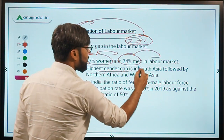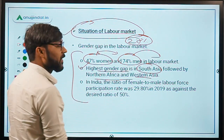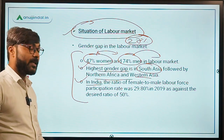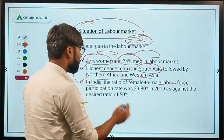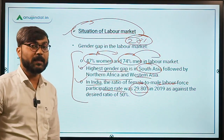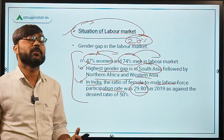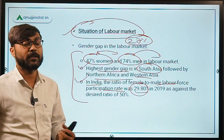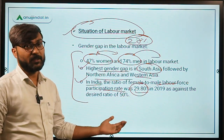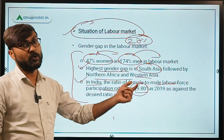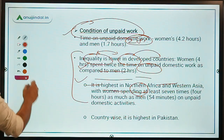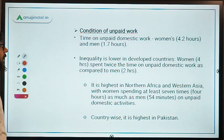In India, the ratio of female to male labor force participation rate was just 29.80% in the year 2019, whereas according to norms it should be 50%. This reflects a huge gender gap in the labor market.